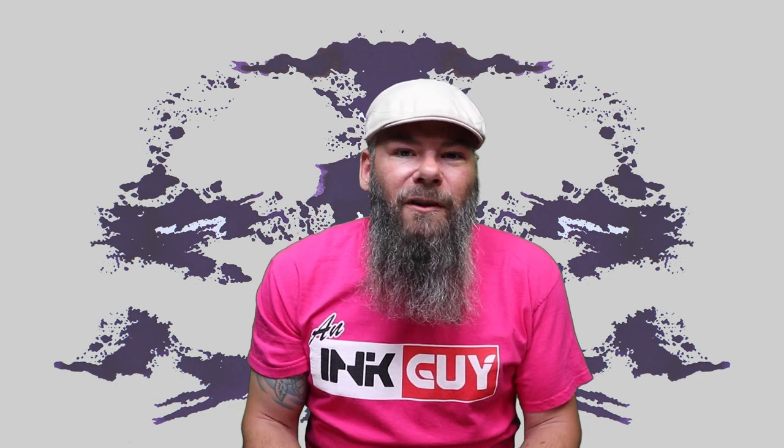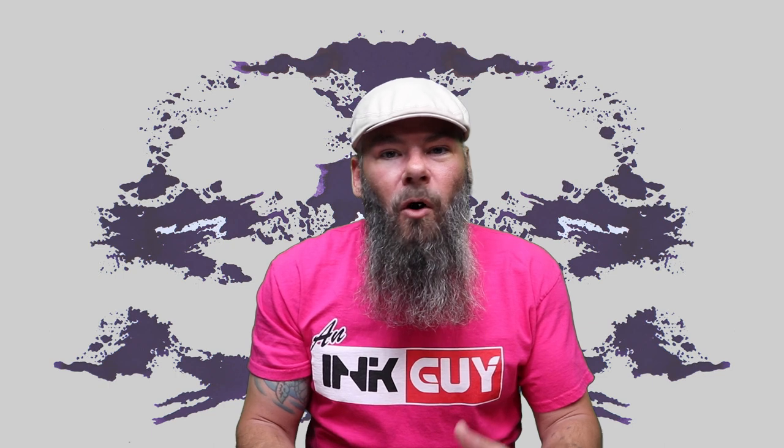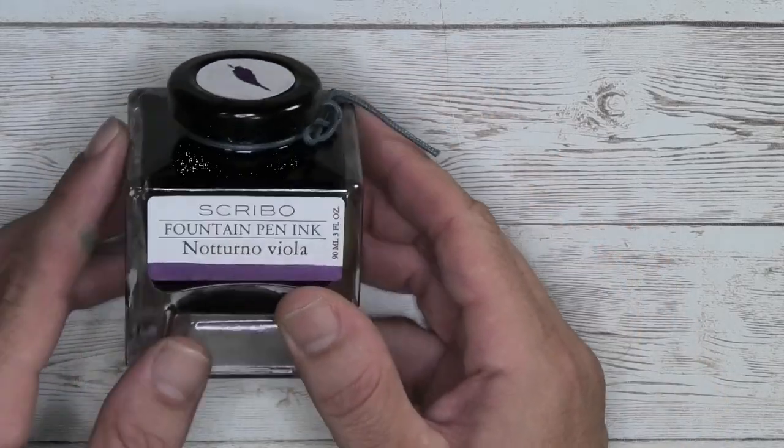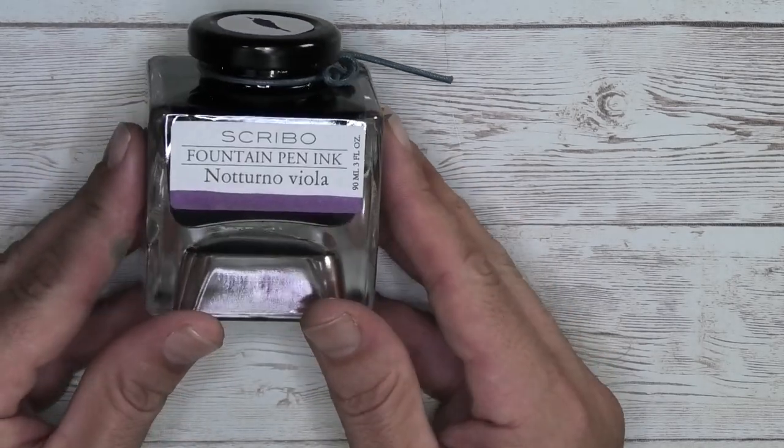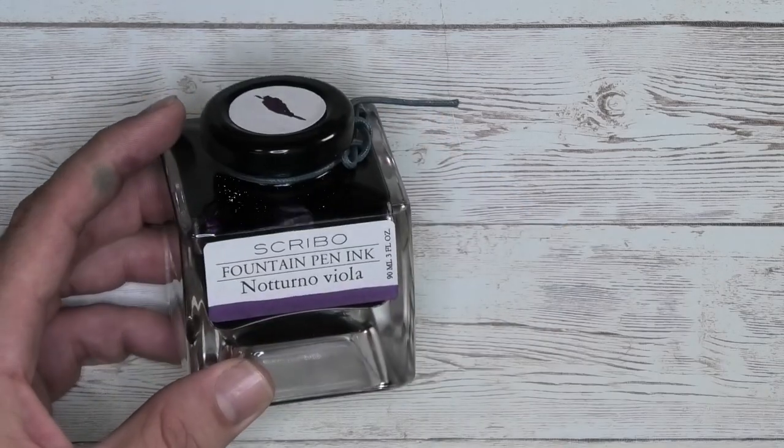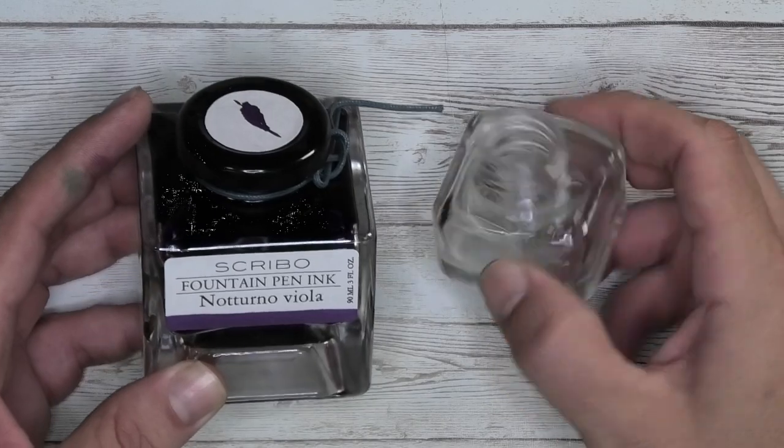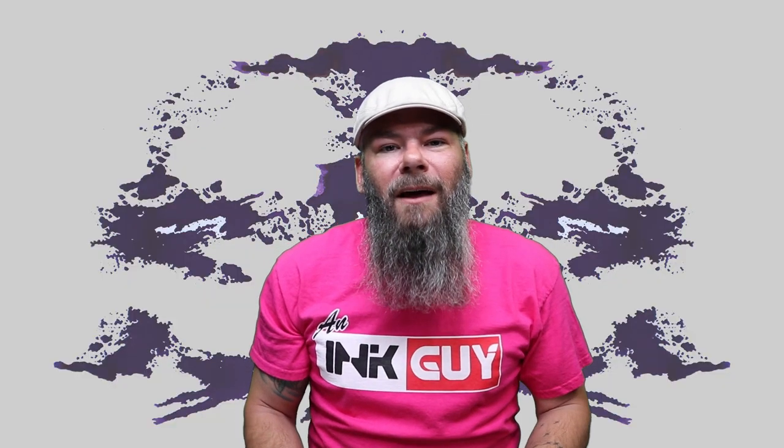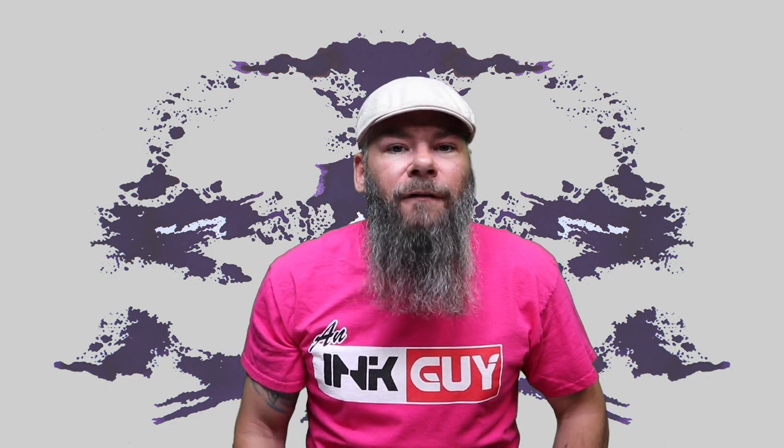The bottle this ink comes in is truly substantial and holds three ounces of ink. Just taking a look at it, you don't really think that it has as much ink as it does. It's massive. Here it is next to a J. Herbin bottle just to give you a sense of scale. The bottle has some serious chonk and heft to it. But let's get into the first writing sample done on Clairefontaine.